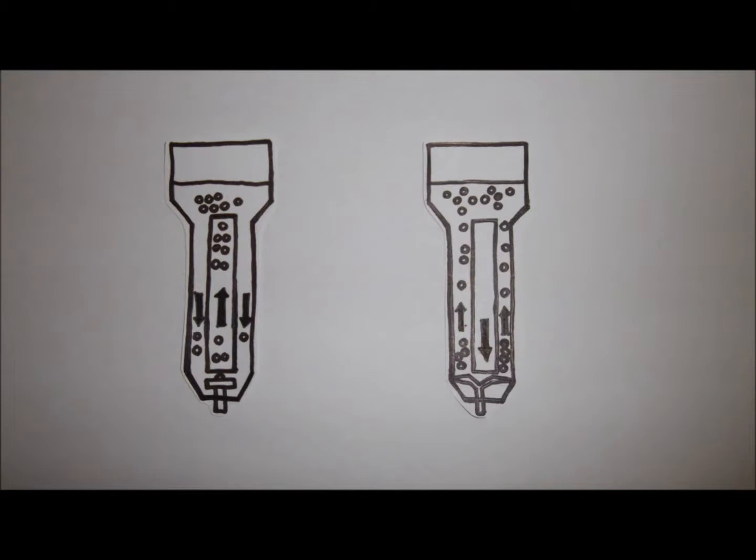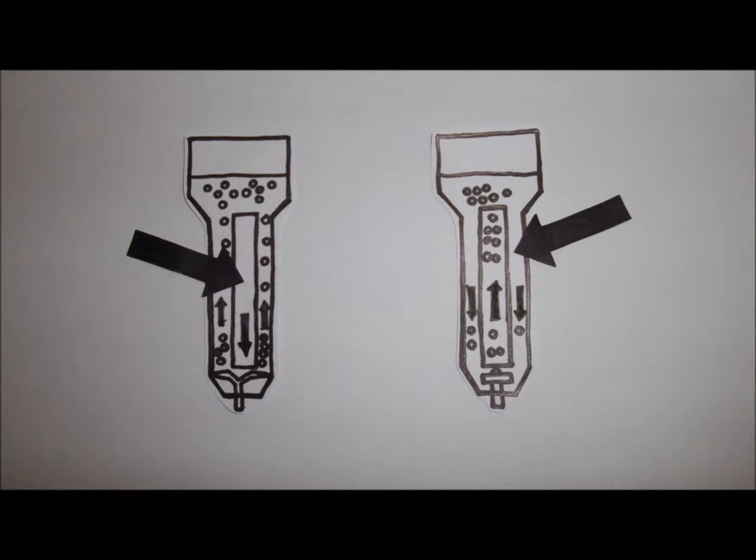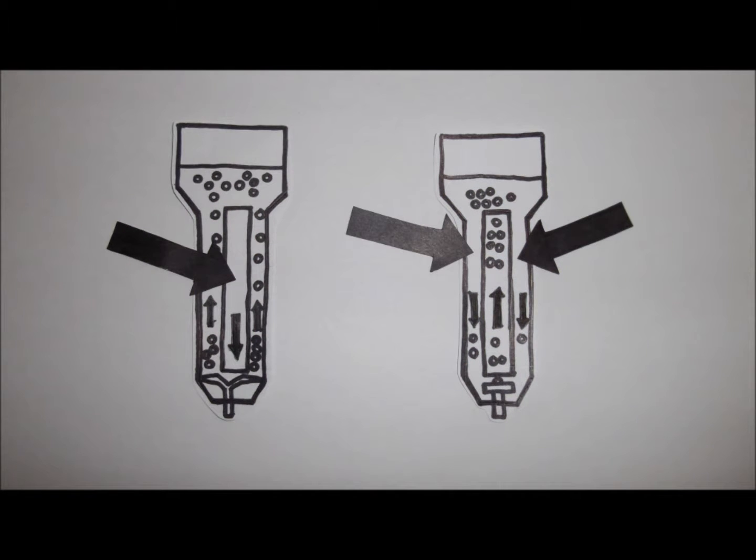The downcomer is the area where fluid is directed downwards in a vertical fashion. This counters the upward movement of the air bubbles, circulating the liquid and improving the mixing efficiency.